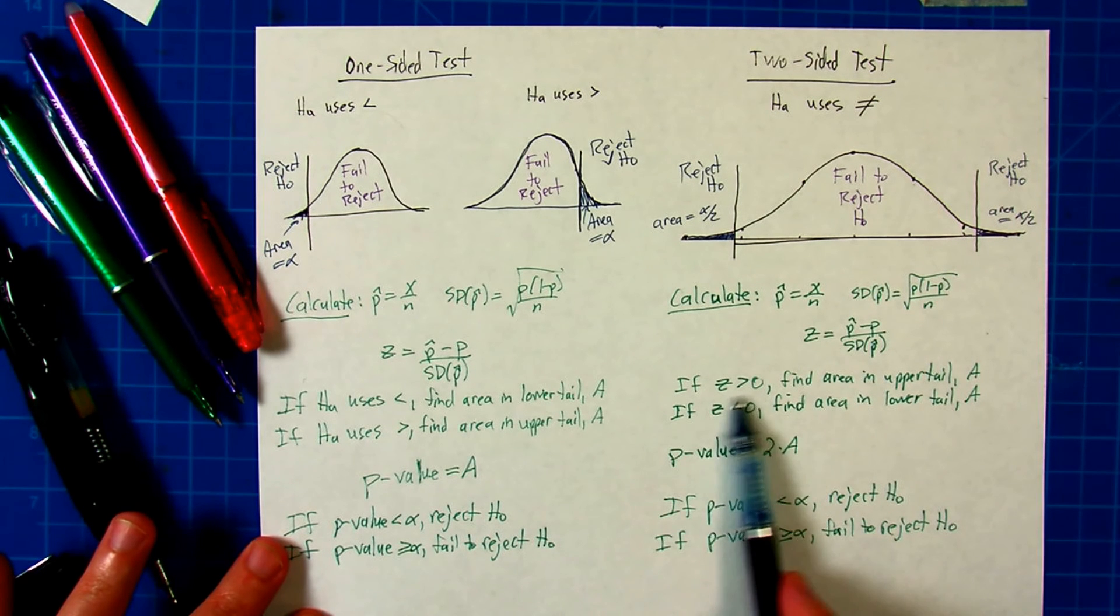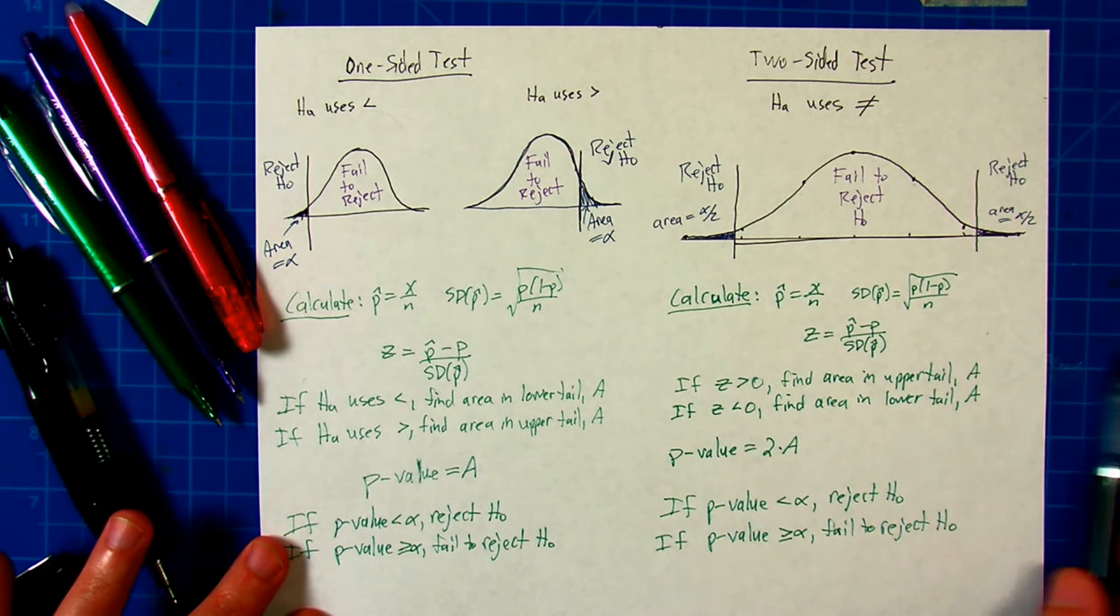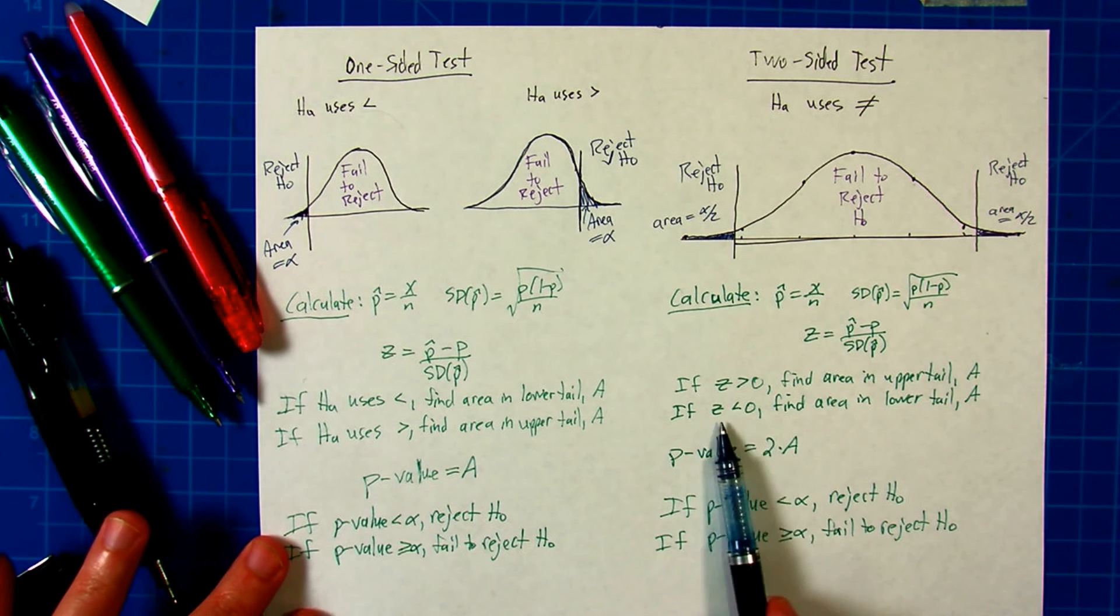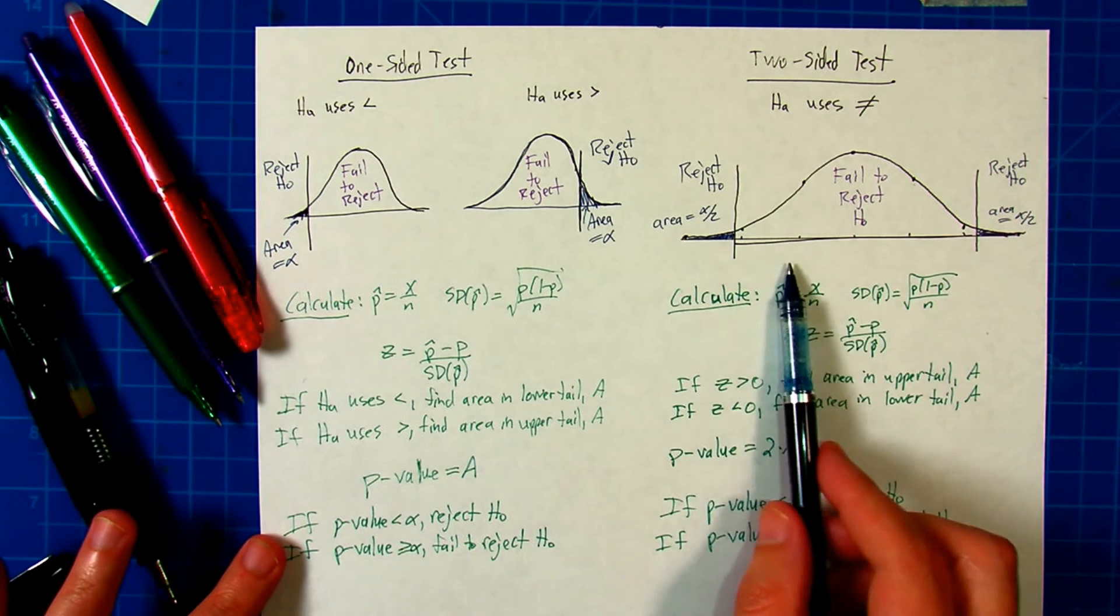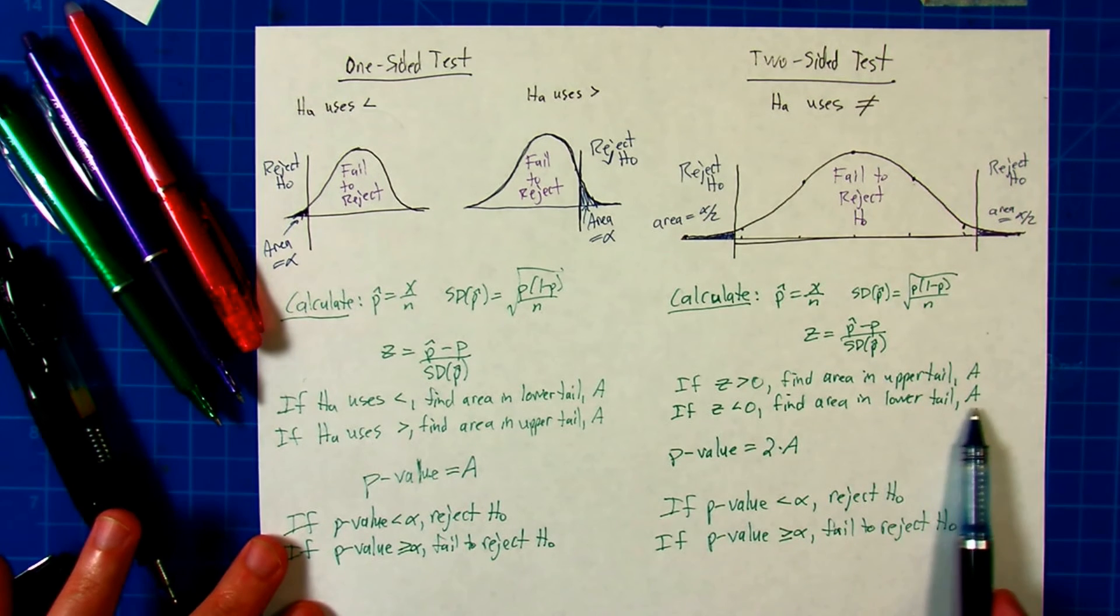Now, if z is greater than zero, you find the area in the upper tail because you've got a positive z-score. If z is negative, you've got a value in the lower tail, so you need to find the area less than z.